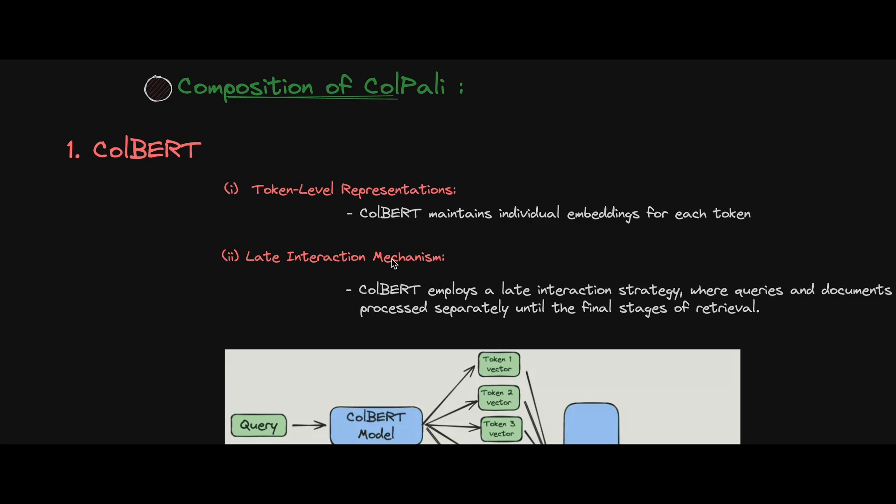ColBERT uses token-level representation — it maintains individual embeddings for each token instead of creating an embedding for a whole chunk, sentence, or topic. It creates an embedding for each token individually. The second and most important thing in ColBERT is the late interaction mechanism.